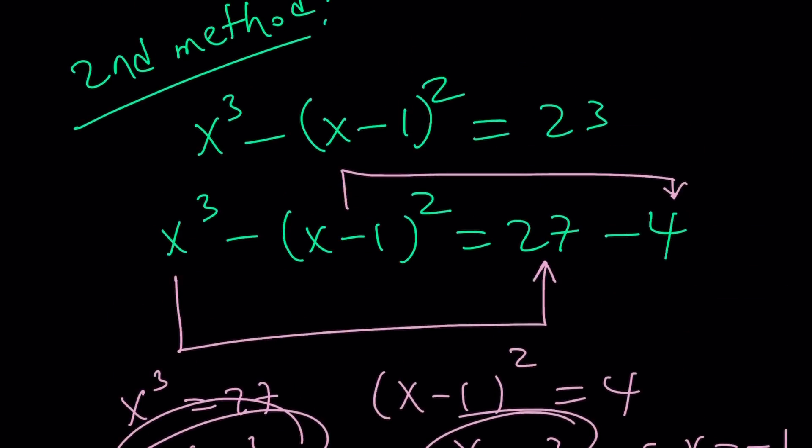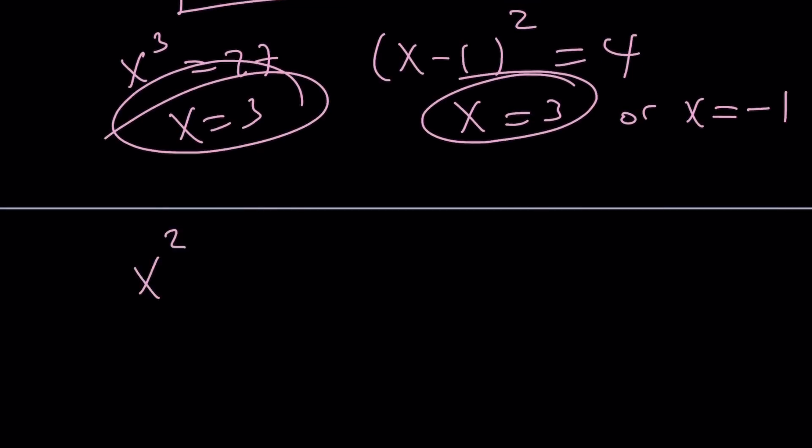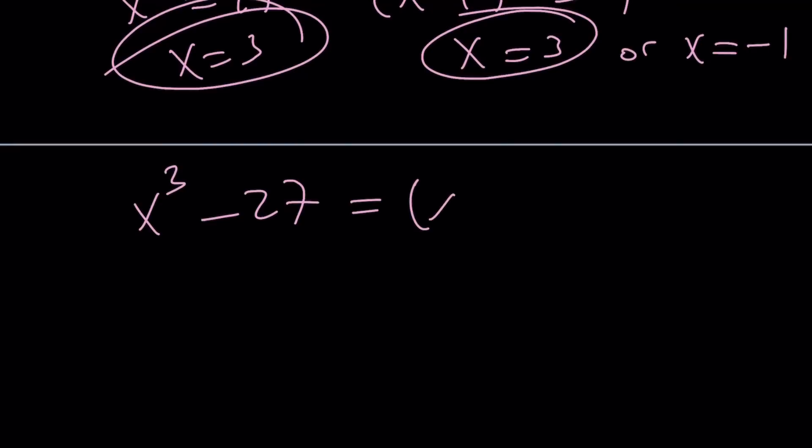So, let's go ahead and do the following. Crisscross applesauce. We're going to put the 27 on the left-hand side and the square on the right-hand side. So x³ - 27, and then put the (x - 1)² on the right-hand side and subtract the 4 from it. And guess what you have? You have two wonderful expressions. Difference of 2 cubes, difference of 2 squares. Awesome. Isn't that awesome?